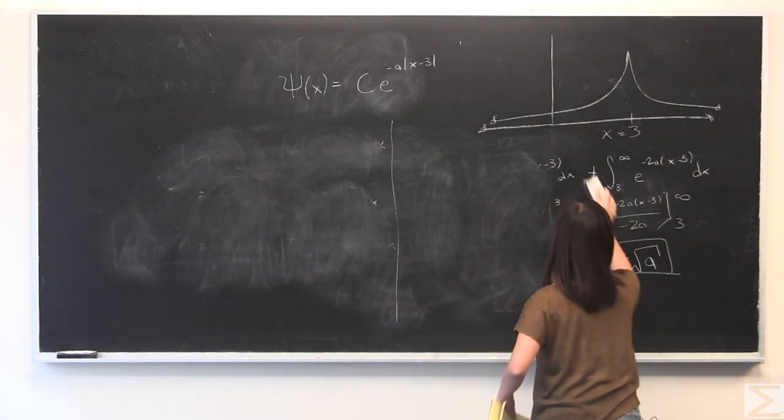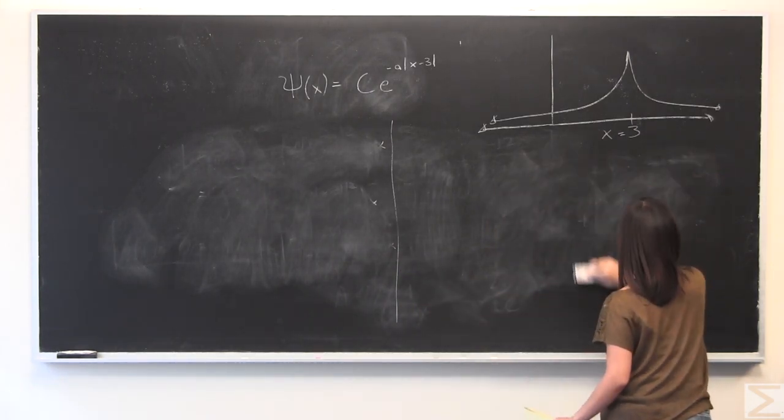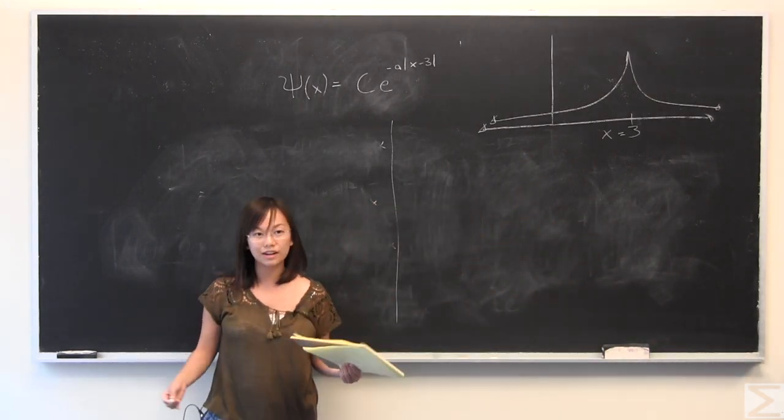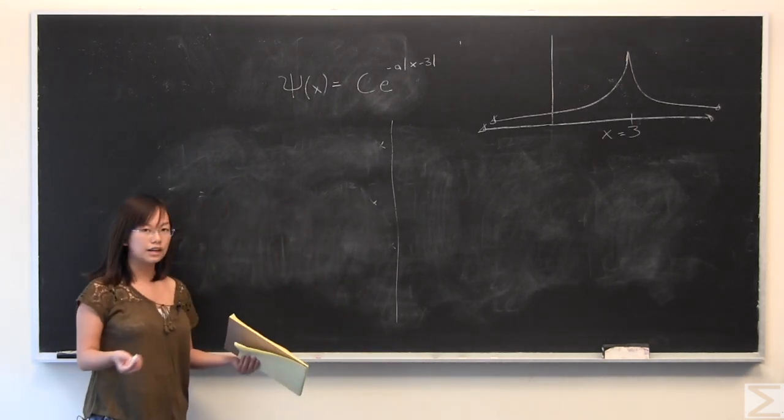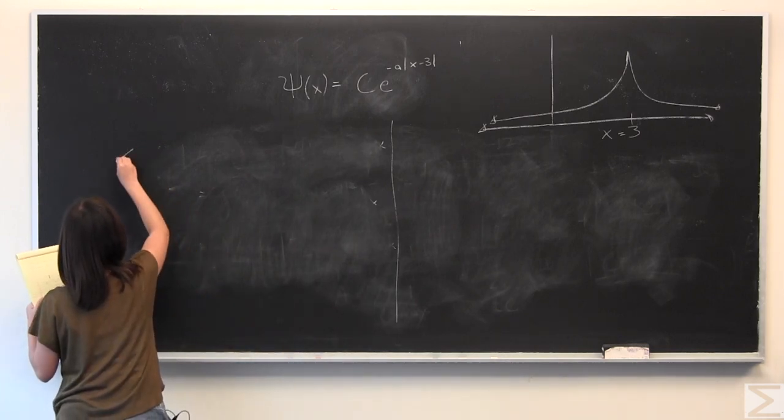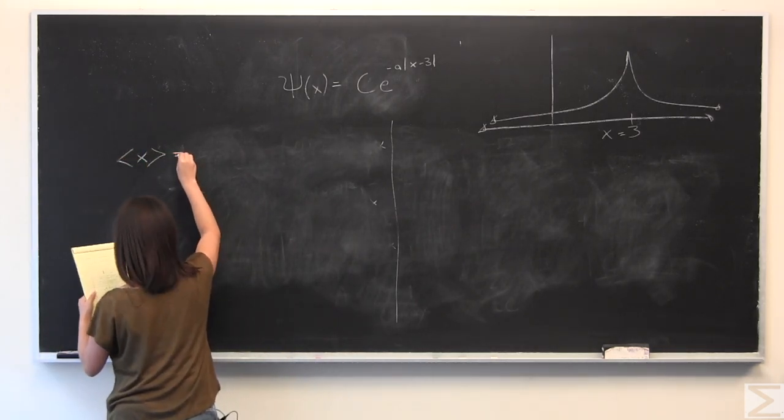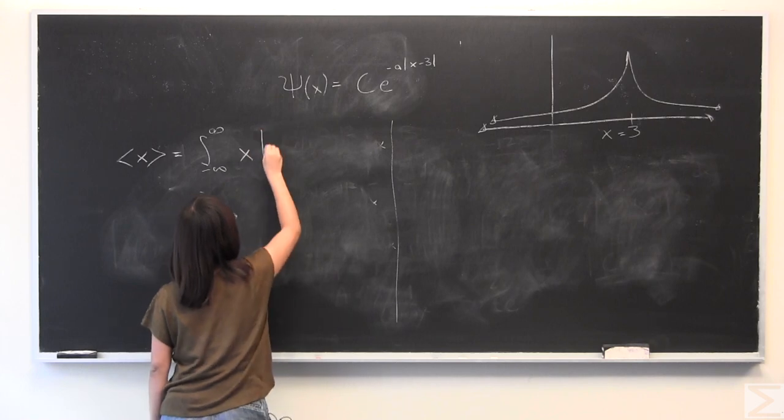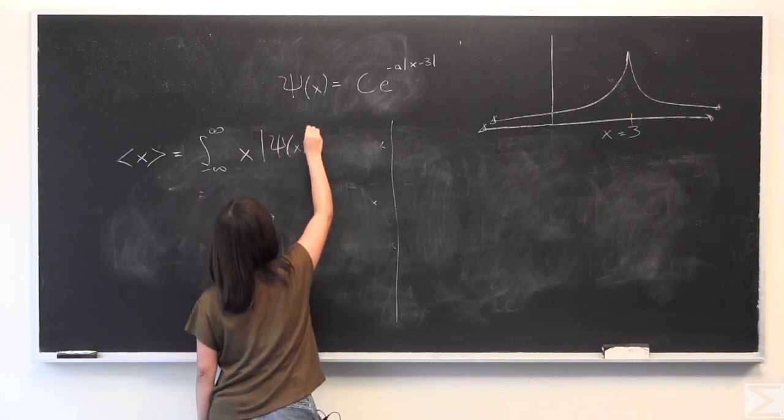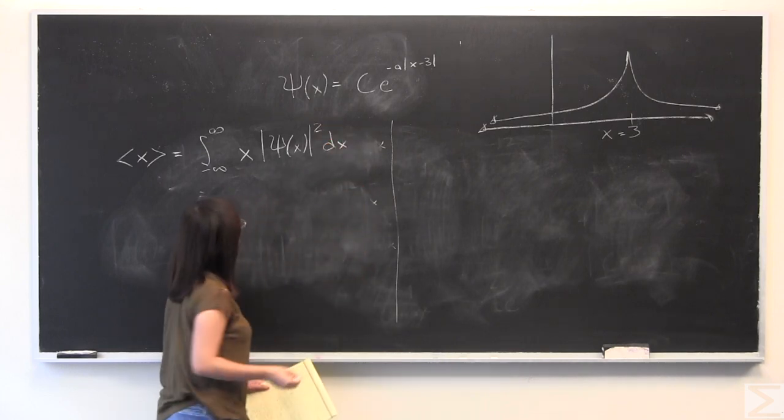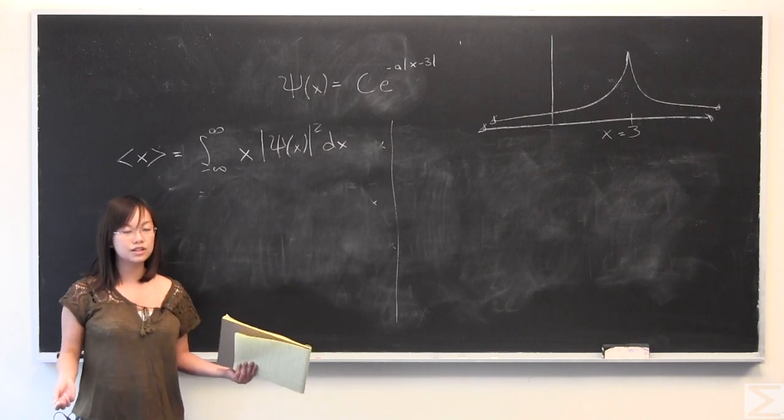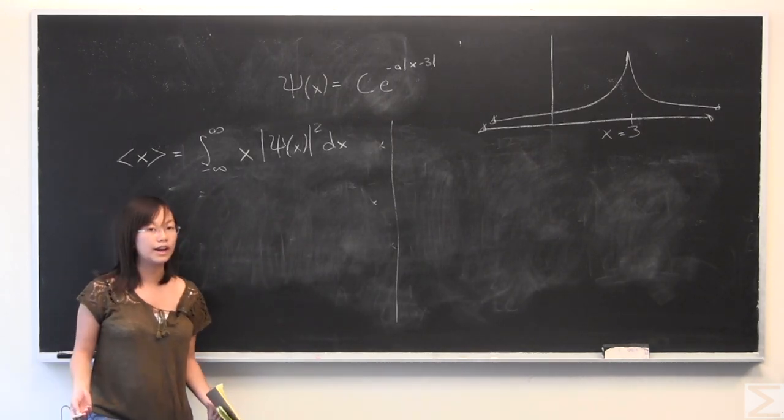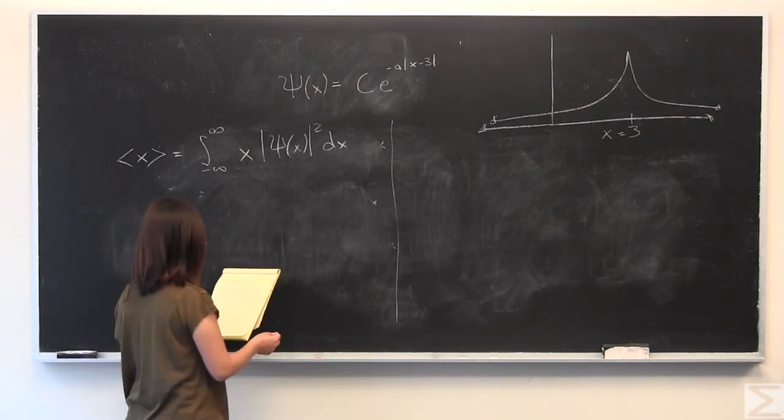So the next part asks you to find the expectation value of x. And from the graph, that is pretty clear. We know it's x equal to 3. But it also asks to confirm that through the more rigorous definition of how you would find expectation value of x. I will write that out right here. And basically, it's when you take x and you multiply it by that probability, which is given by this psi of x absolute value squared. So we can just evaluate this. It becomes a pretty simple integral. We've solved for c already. We know that c is equal to the square root of a. So this is pretty straightforward.